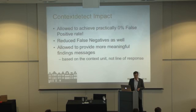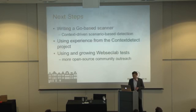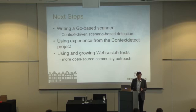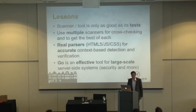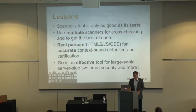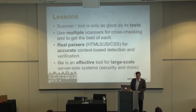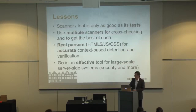Since we do more accurate detection it also reduces false negatives. We provided more meaningful findings messages because we're based on context units. Quickly on next steps: I'm working as a side project on a Go-based scanner that will implement this idea of context breakers and so on, using experience from Context Detect, and we'll be using and growing WebSecLab tests — so if you have ideas on what can be added please let us know. Some lessons: a scanner and tool is only as good as its tests. You should be serious about tests if you want to produce a quality scanner. It's best to use multiple scanners to get the best of each and cross-check them.